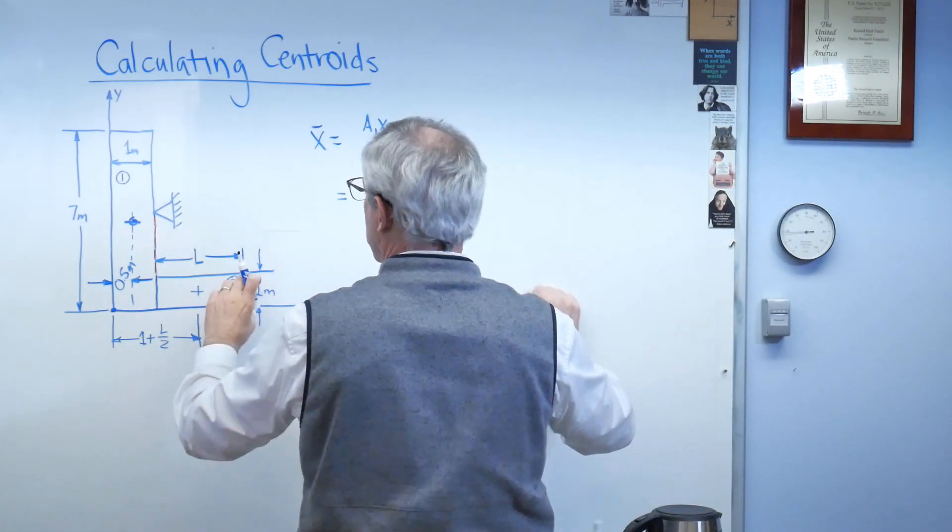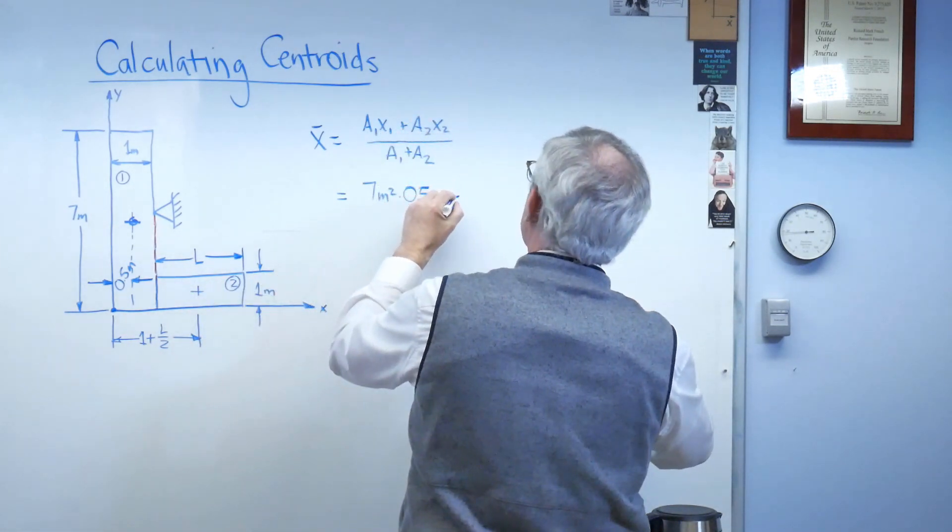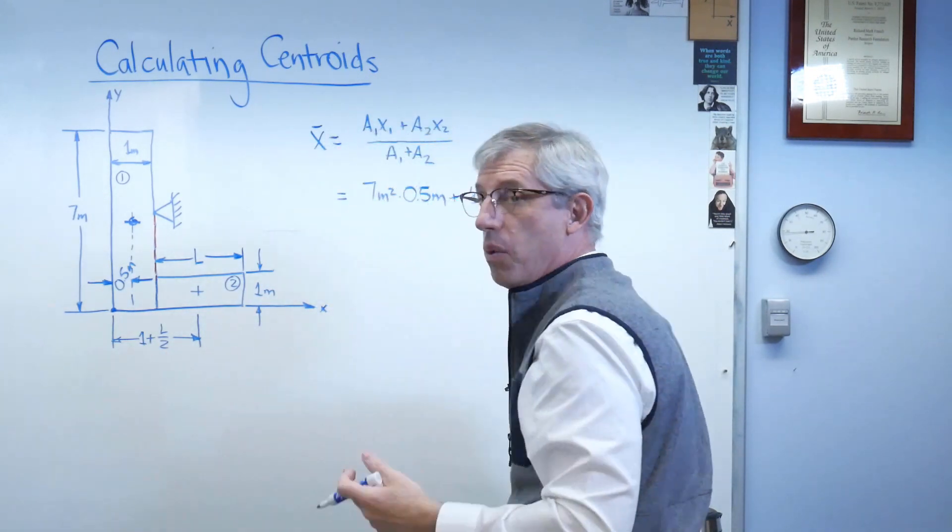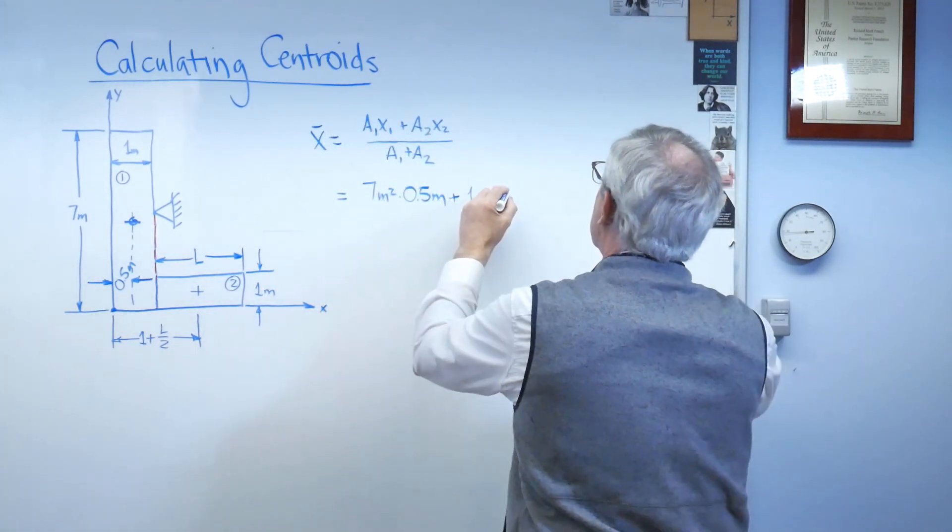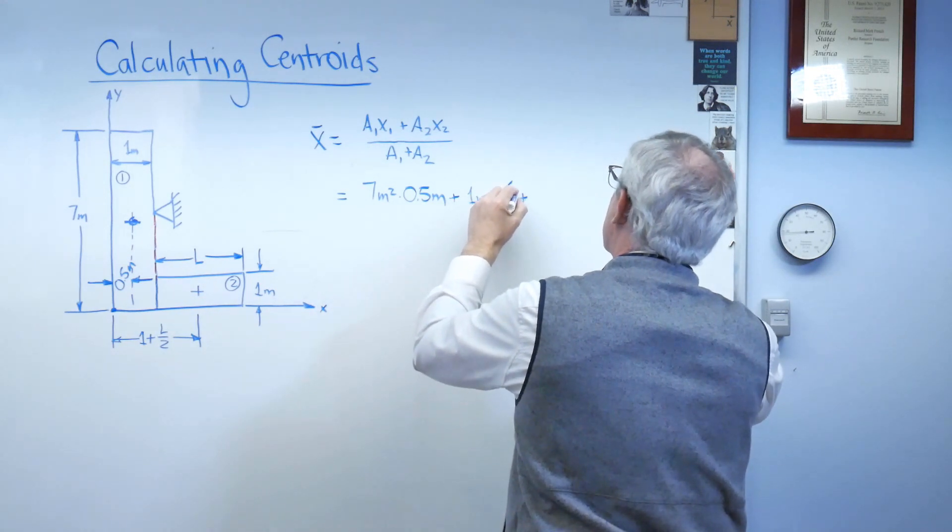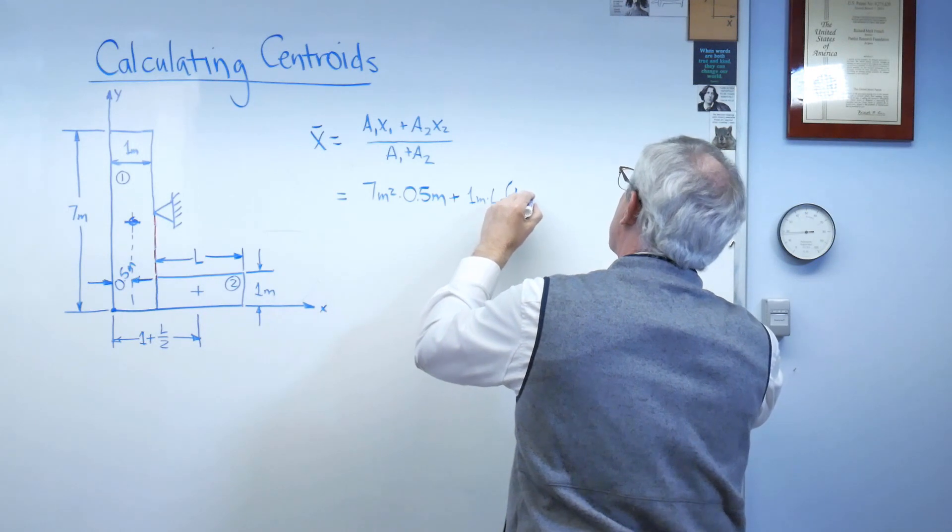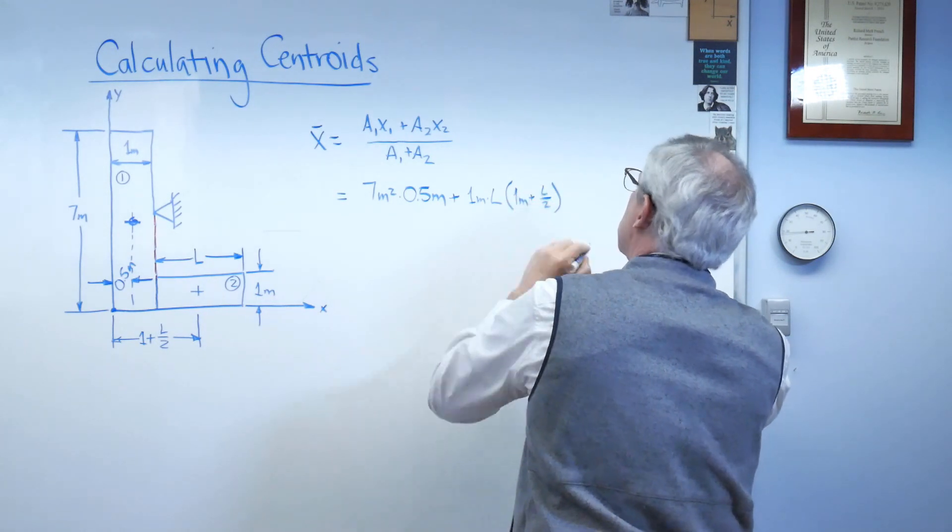A2, well, the area is 1 meter times l, so it's 1 meter times l, and its distance is 1 plus l over 2. And I've got to keep my units here, 1 meter plus l over 2. All right, so I've got that.